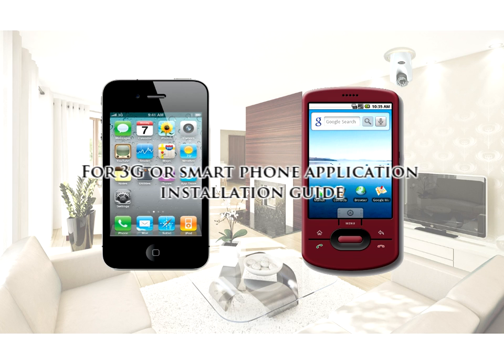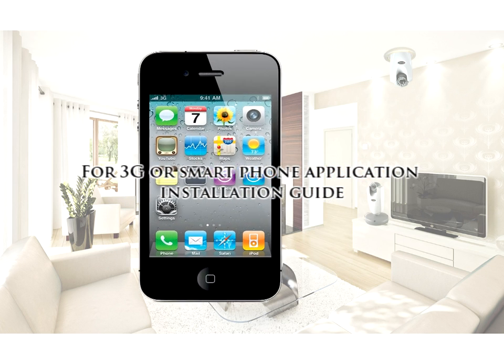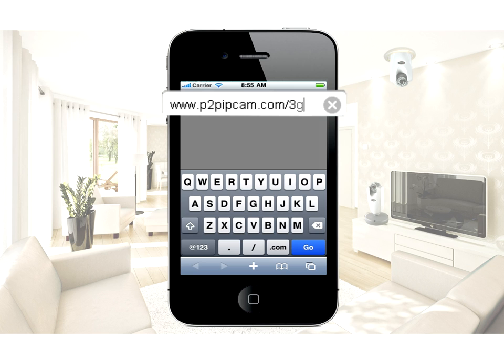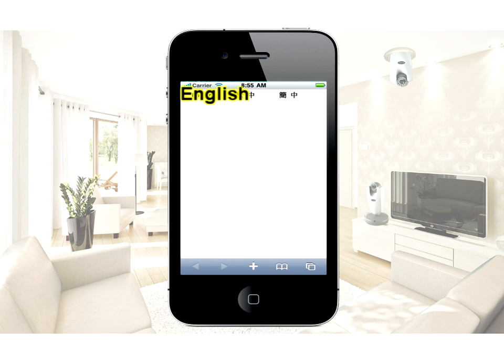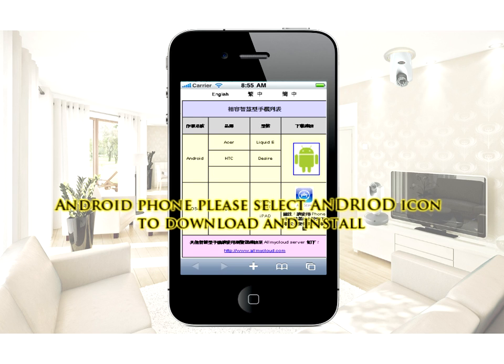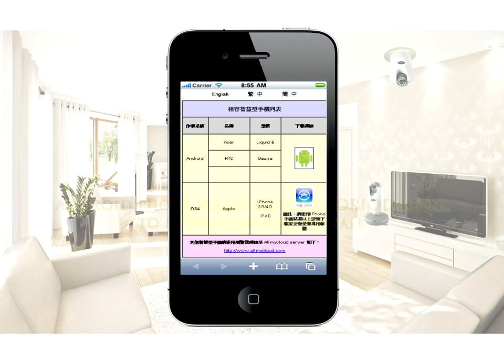For 3G or smartphone application installation guide, go to www.p2pipcam.com/3G. Choose language and select the correct operating system. Download the remote monitoring application into your smartphone.